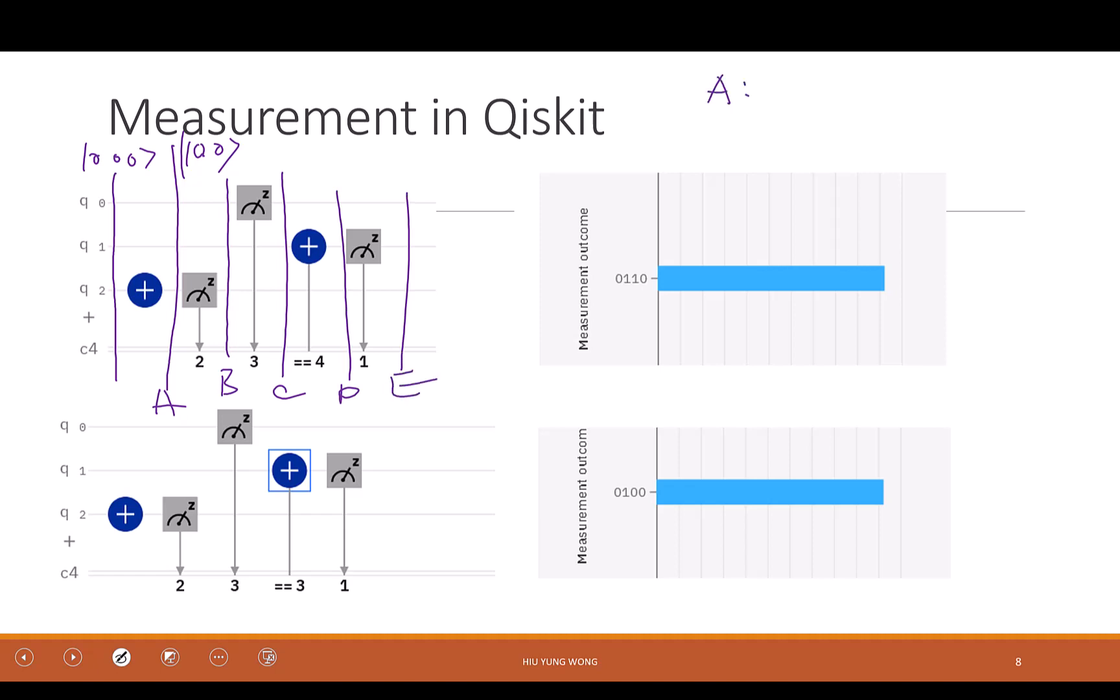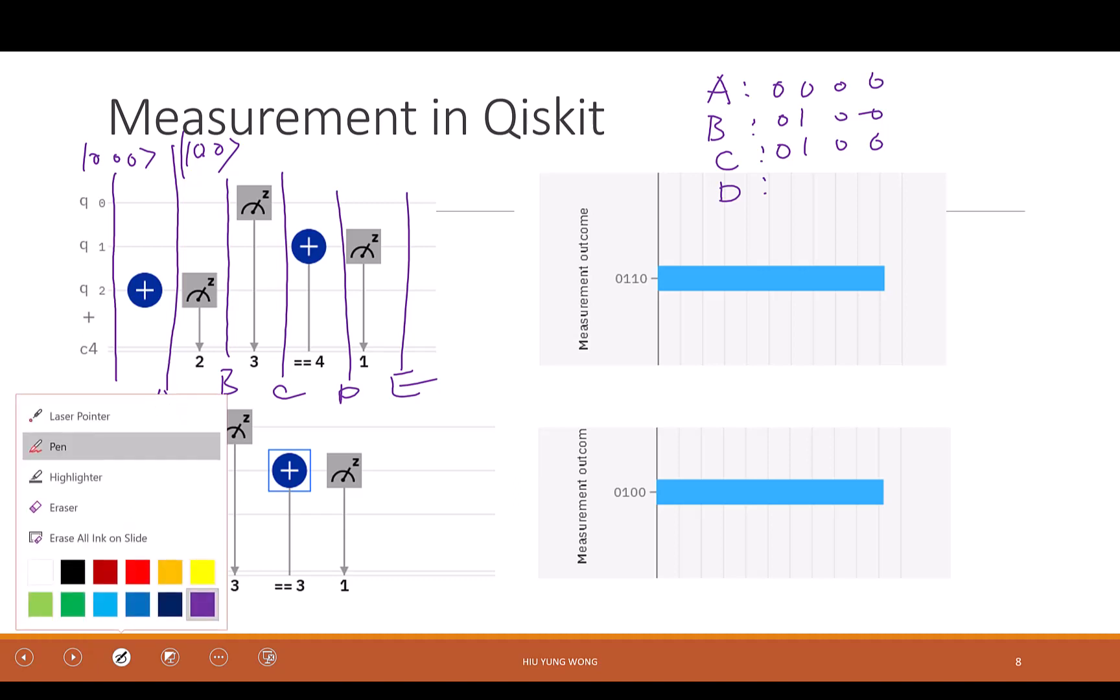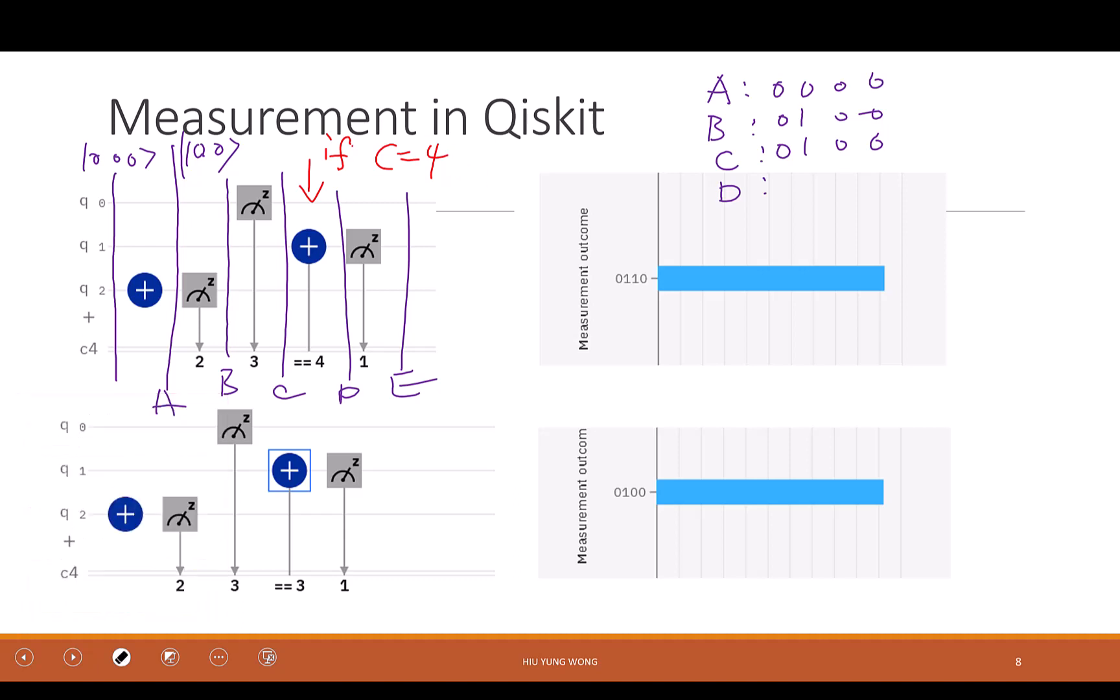Start from A. What is the content of the classical register? 0, 0, 0, 0. Because all initialize to 0. What is the content at B? I measure Q2. And what should I get? I get 1. 0, 1, 0, 0. And then at C. I measure Q0, which is 0. And I start at 3. Which, so no effect. How about at 4.